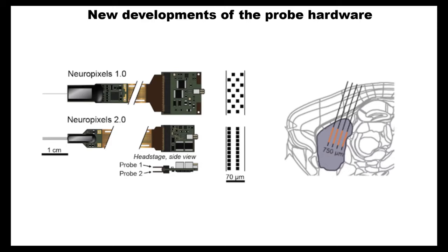Another advantage is that Neuropixels 2 comes in two varieties: one shank or four shank. In the four-shank configuration, you can choose recording sites located in a stripe, so you will have recording channels at the same depths on all four shanks. This may be beneficial if you're recording from a structure that is elongated in the horizontal axis — for example, if you want to record from visual cortex as we did.